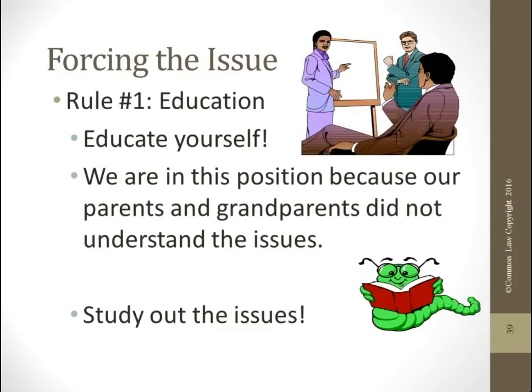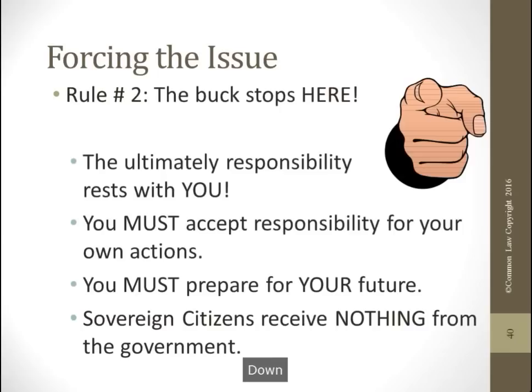In today's world, in order to be truly sovereign, you must be prepared to force the issue up to and including court. Number one rule is educate yourself. You're in this position because your parents and grandparents did not understand the issues. Study out the issues. Rule number two: the buck stops here. You are the one that's responsible. You have to assert your rights, accept responsibility for your actions, and prepare your future.